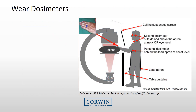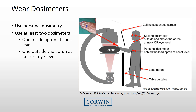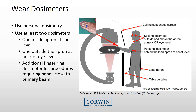All personnel in a room during fluoroscopic procedures are required to wear personal dosimetry. For those that perform a lot of fluoroscopy and stand near the patient or radiation beam, it is recommended that two dosimeters be worn: one inside the apron at chest level and the second outside the apron at neck level. An additional ring dosimeter may be issued for procedures that require hands near the primary beam. If only issued one dosimeter, wear the badge at neck level outside the lead apron. Dosimetry must be properly worn and turned in in a timely manner.